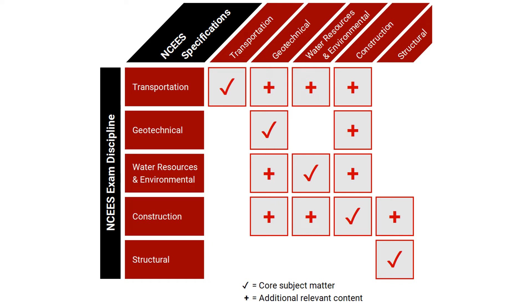The NCEES Civil Engineering PE exam is an 80-question exam, and you have five disciplines to choose from: transportation, geotechnical, water resources and environmental, construction, and structural.